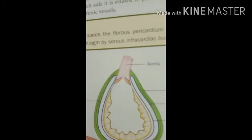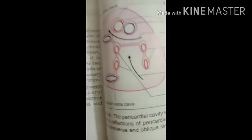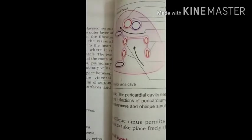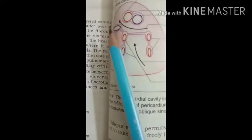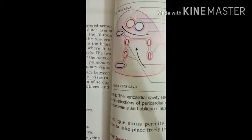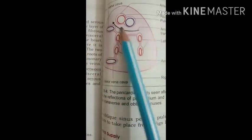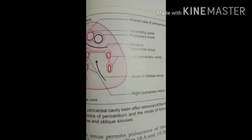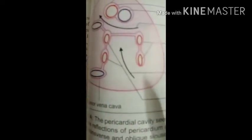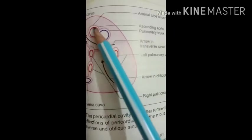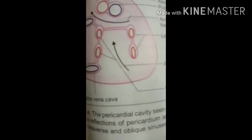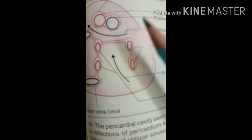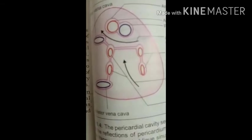Next are the sinuses of the pericardium. There are two sinuses: the transverse sinus and the oblique sinus. Here you can see the transverse sinus and the oblique sinus in the diagram. The epicardium at the root of the great vessels is arranged in the form of two tubes — the arterial tube and the venous tube. The arterial tube encloses the ascending aorta and the pulmonary trunk.